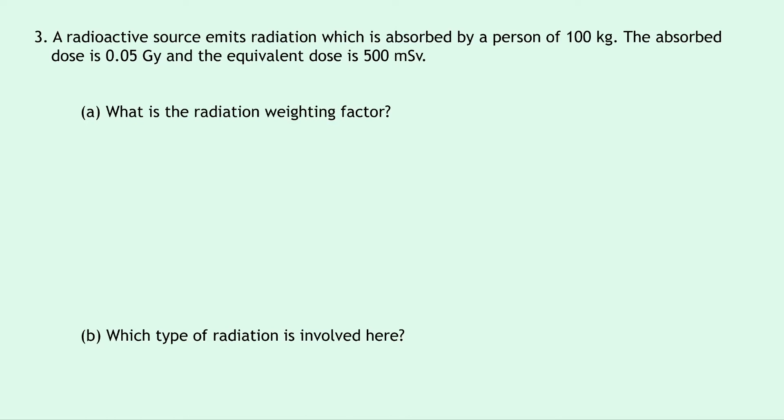Lastly, question three says that a radioactive source emits radiation which is absorbed by a person of 100 kilograms. The absorbed dose is 0.05 grays and the equivalent dose is 500 millisieverts.